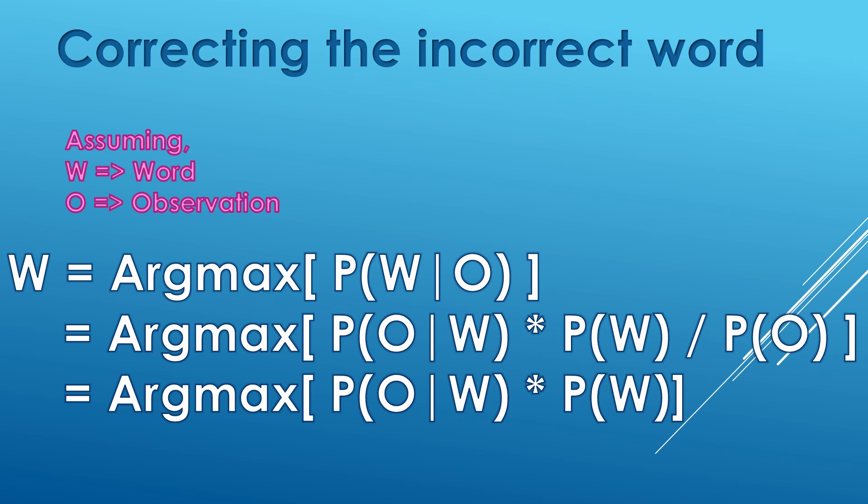In order to calculate probability of observation, entire corpus is necessary and hence is difficult. And it remains constant for almost all observations. Hence, we can neglect the denominator probability of O. The formula now boils down to probability of O given W into probability of W.